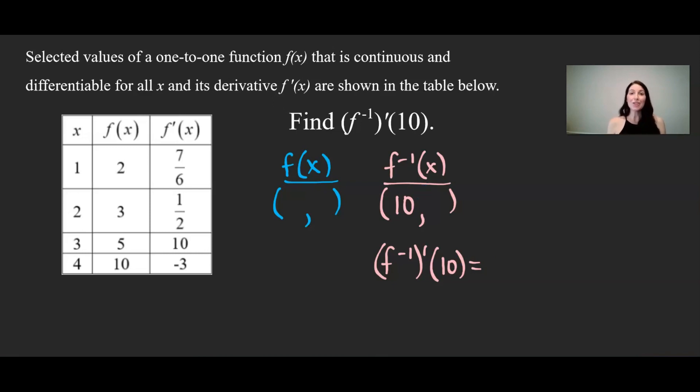So that means this 10 must be the x value of f inverse. And because of the relationship I just talked about, it means then the y value of my original f(x) function is 10 because the x coordinate switches to the y coordinate in its inverse.